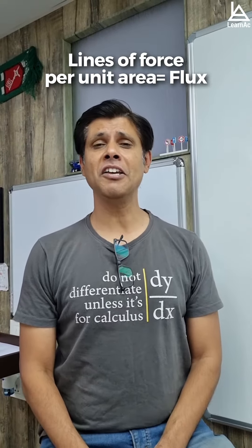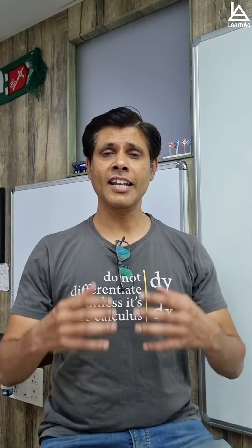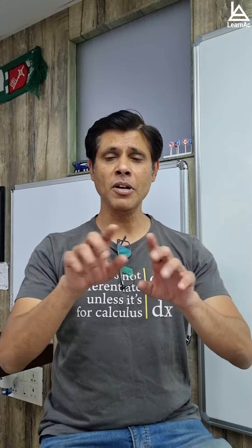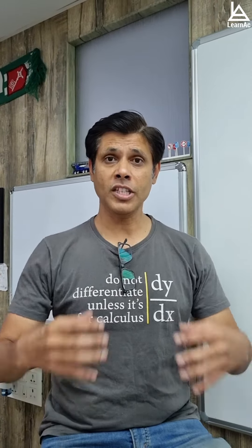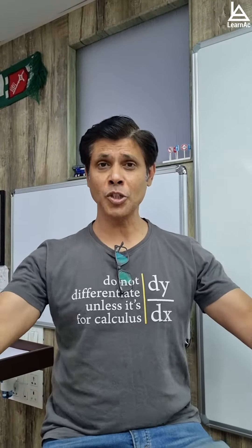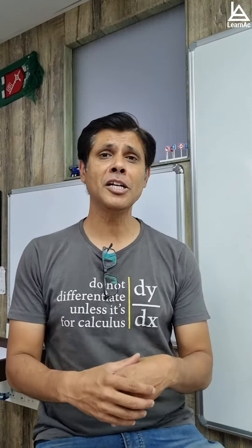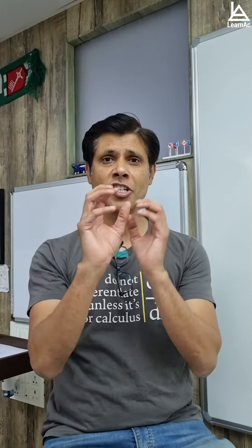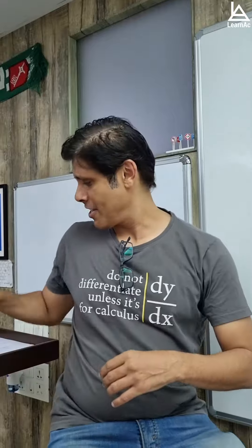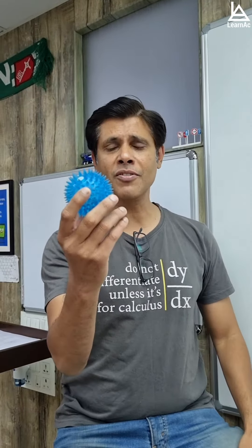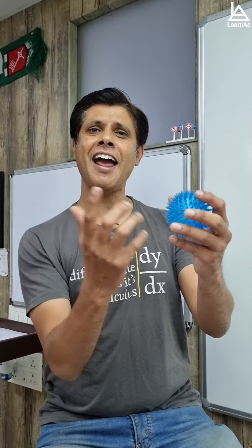Lines of force per unit area is called flux — that means the lines of force emerging from a unit area, that's called flux. Now this flux that you are seeing is actually dependent on the charges which are responsible for this flux. Have a look at this ball — I'm sure you have seen this.